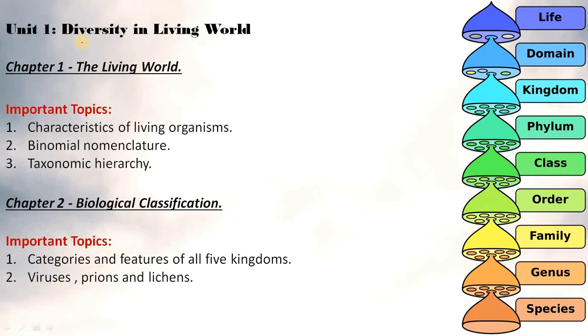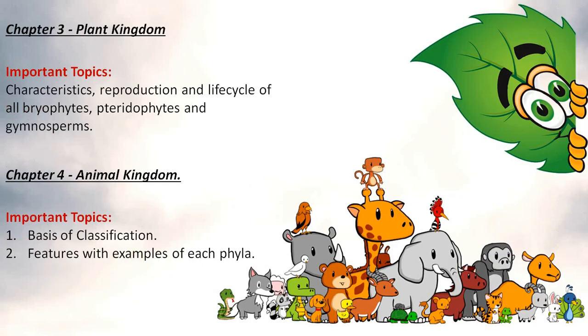Coming to the most important chapters and their divisions. The Diversity in Living World: Chapter 1 The Living World important topics are characteristics of living organisms, binomial nomenclature, taxonomic hierarchy. Chapter 2 Biological Classification important topics are categories and features of all five kingdoms, viruses, prions and lichens.